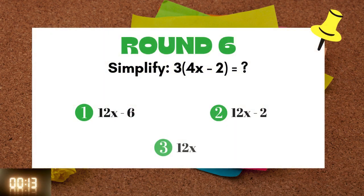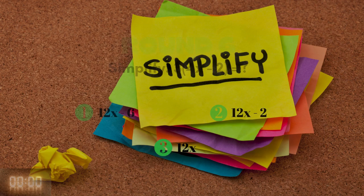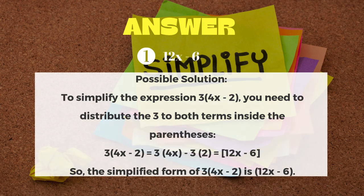Round 6: Simplify 3 bracket open 4x minus 2 bracket close equals. The answer is 12x minus 6.